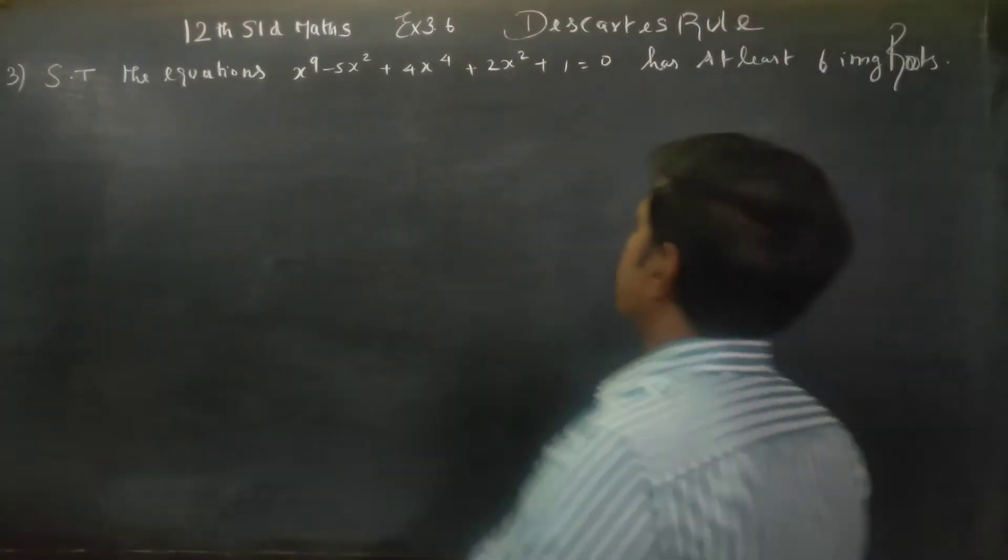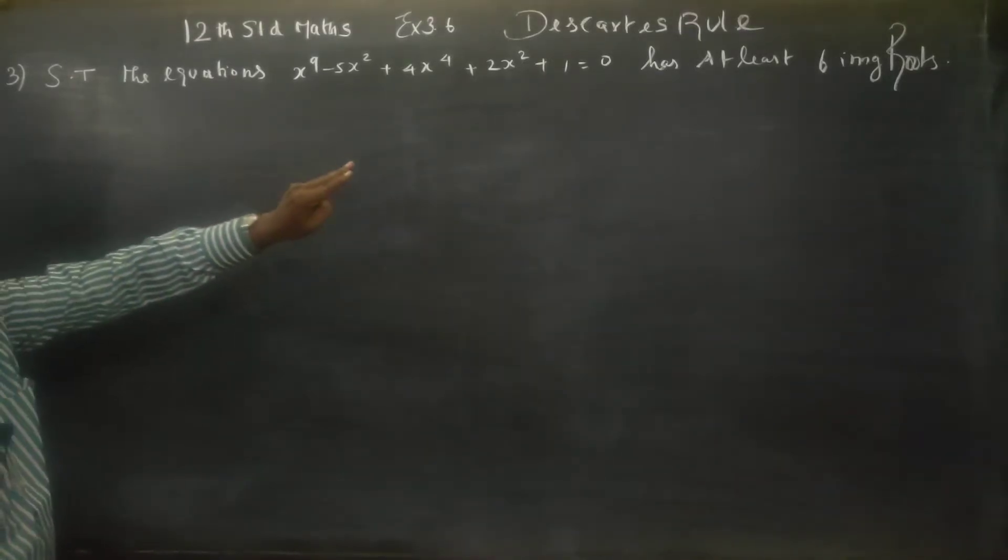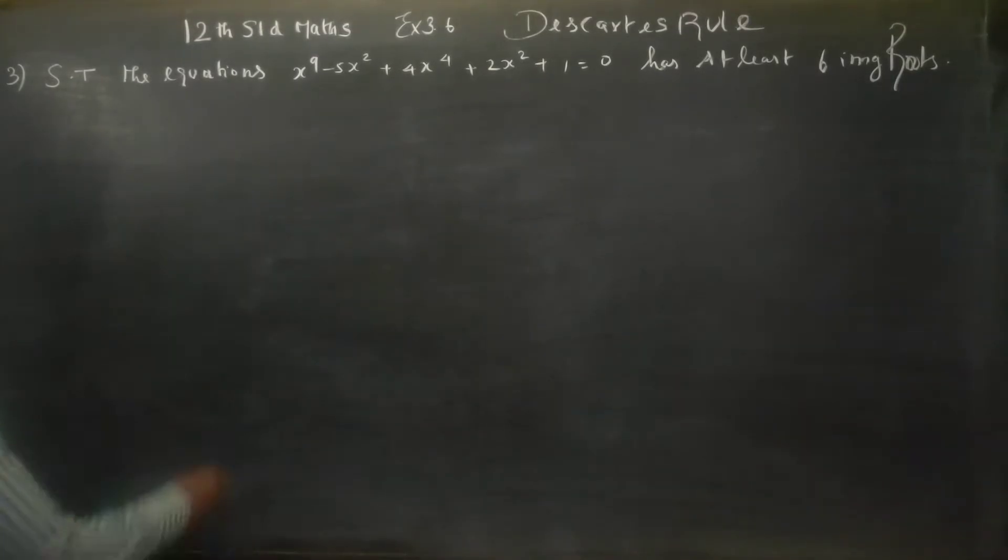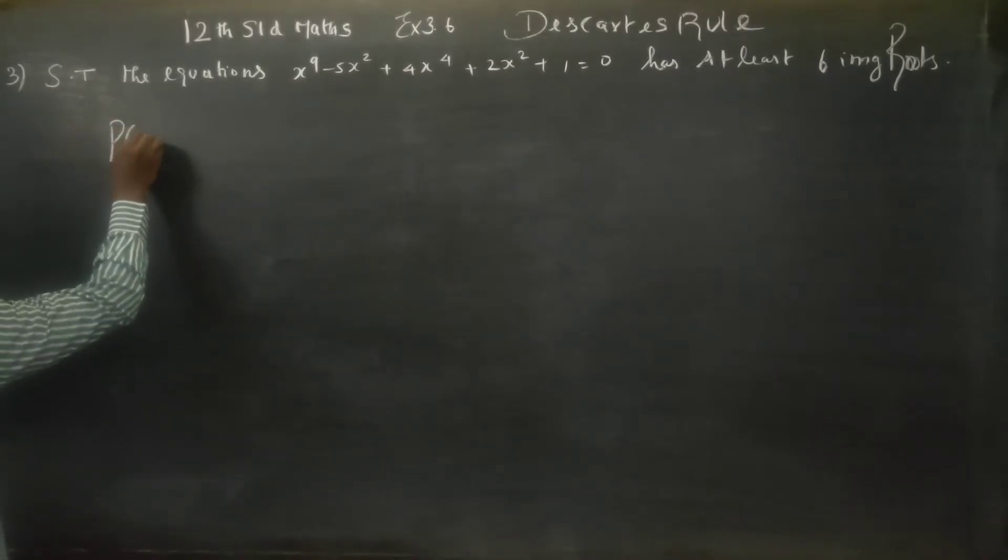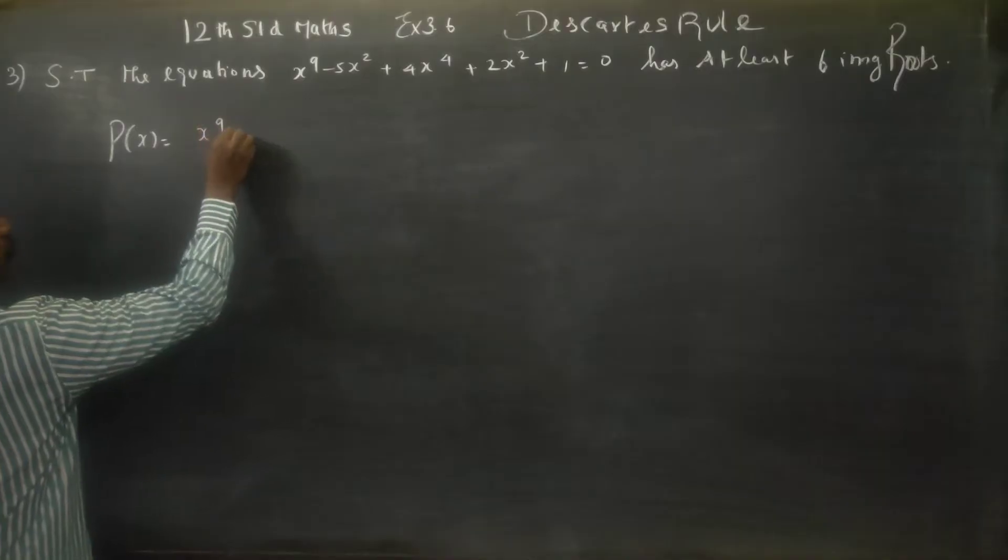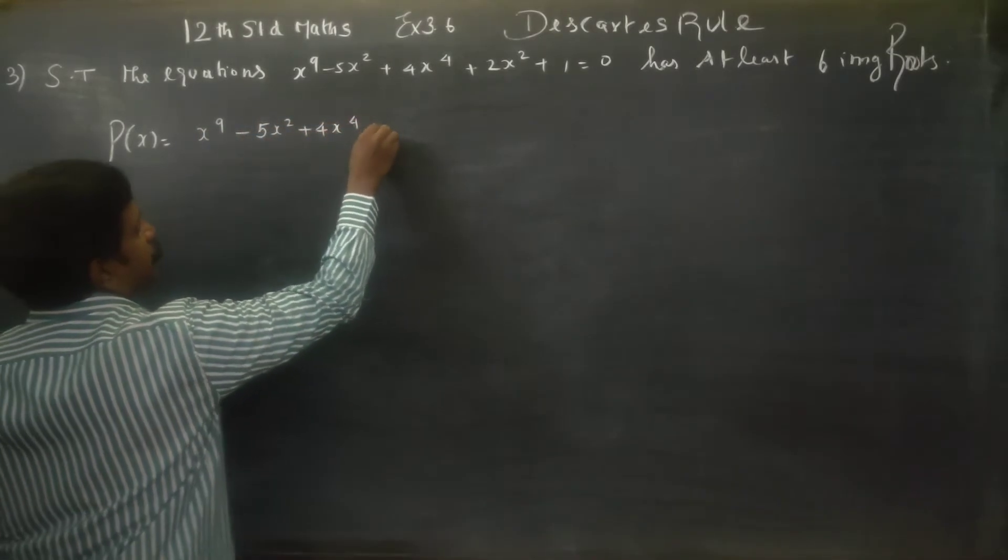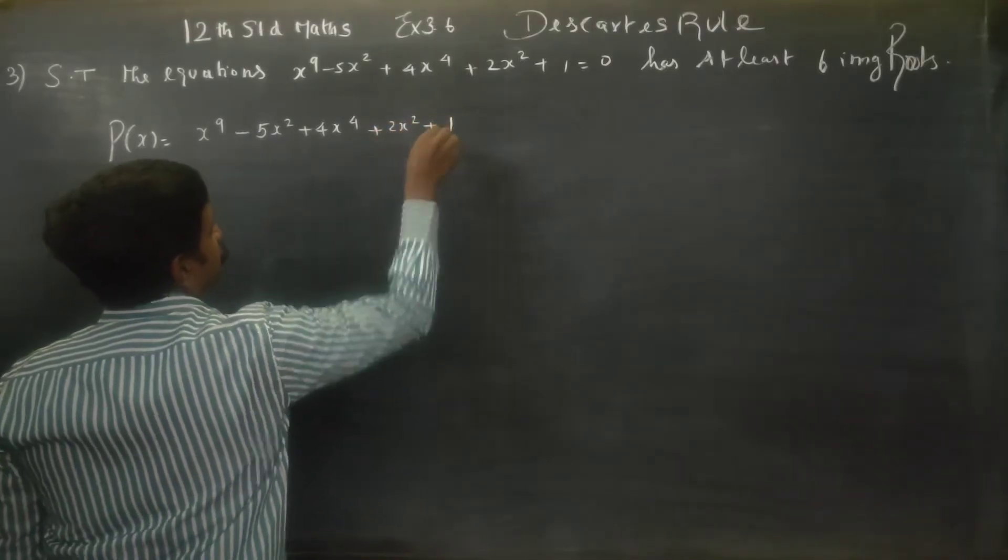Hello students, in exercise number 3.6, show that the equation has at least 6 imaginary roots. First I will consider the given polynomial as P of x, x power 9 minus 5x square plus 4x power 4 plus 2x square plus 1.